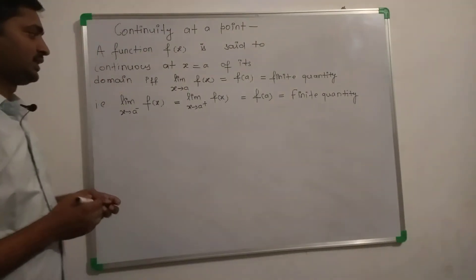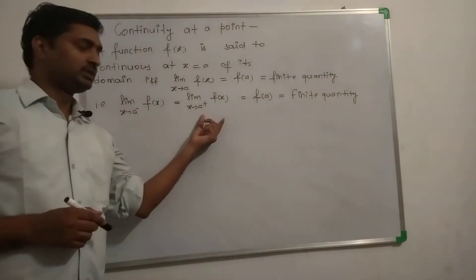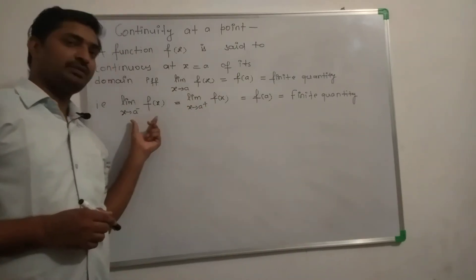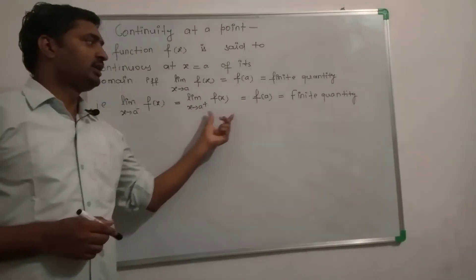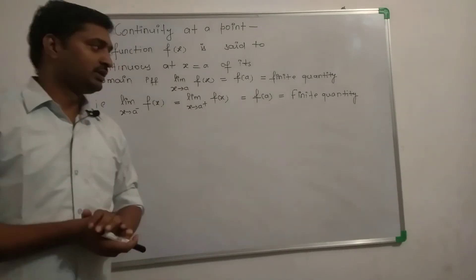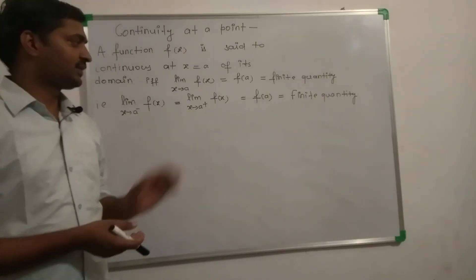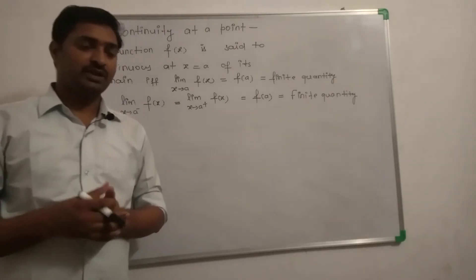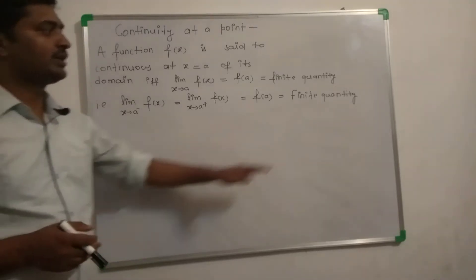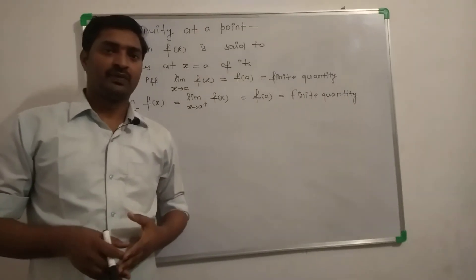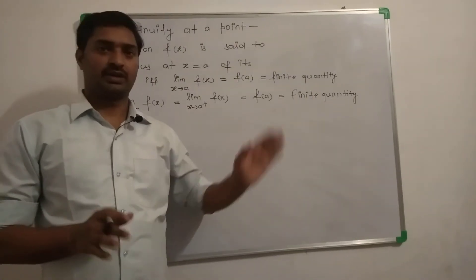Otherwise, a problem here is if the left hand limit and right hand limit are equal to each other but their value is infinite, we cannot say the function is continuous — because it is not going to be a finite quantity. Finite quantity means numbers like 2, 5, 6, 7, minus 10, minus 15, and so on. These are finite quantities — definite numbers.